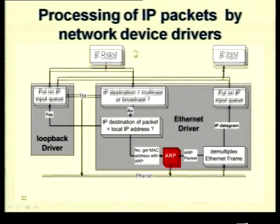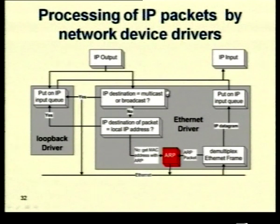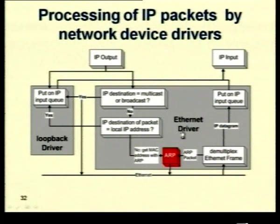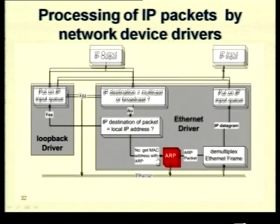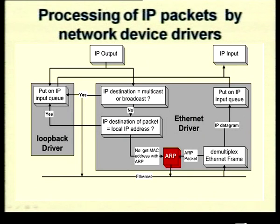For a quick overview of processing within a network device driver: a packet arriving on the ethernet is identified as an IP packet and queued. When sending, the driver checks the destination address to determine if it is multicast, broadcast, or local. If local, it runs ARP to get the MAC layer address and then sends the packet on the ethernet network. This ensures the packet is delivered to the correct final destination.